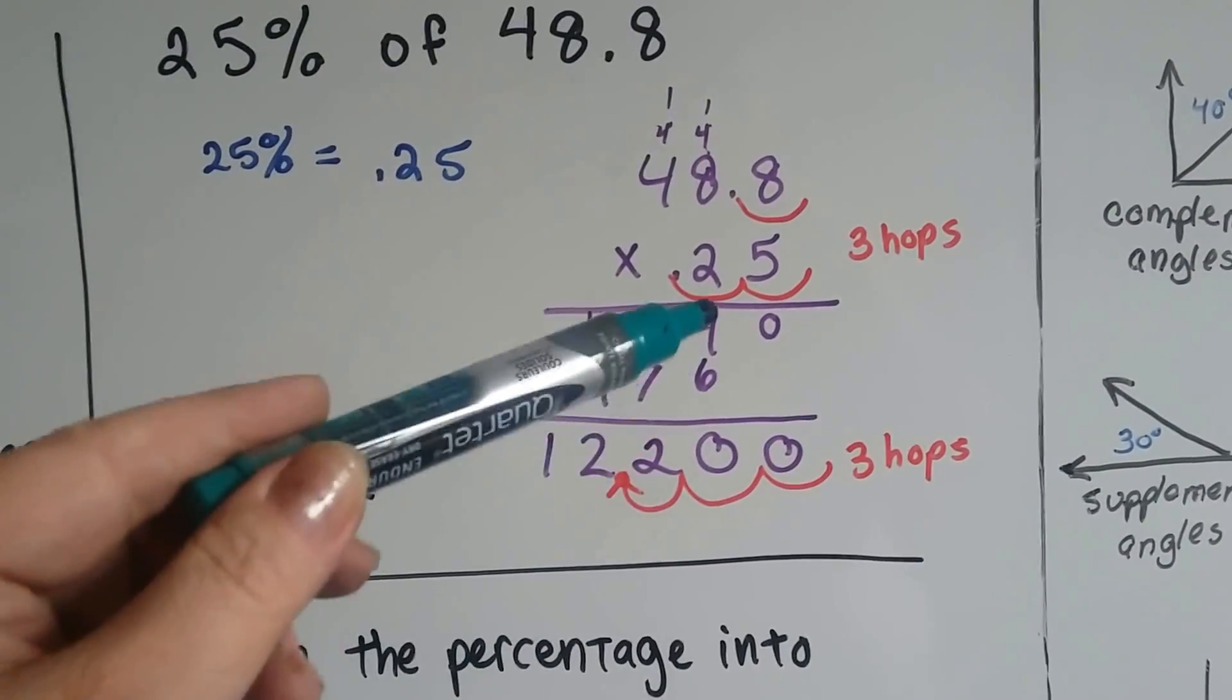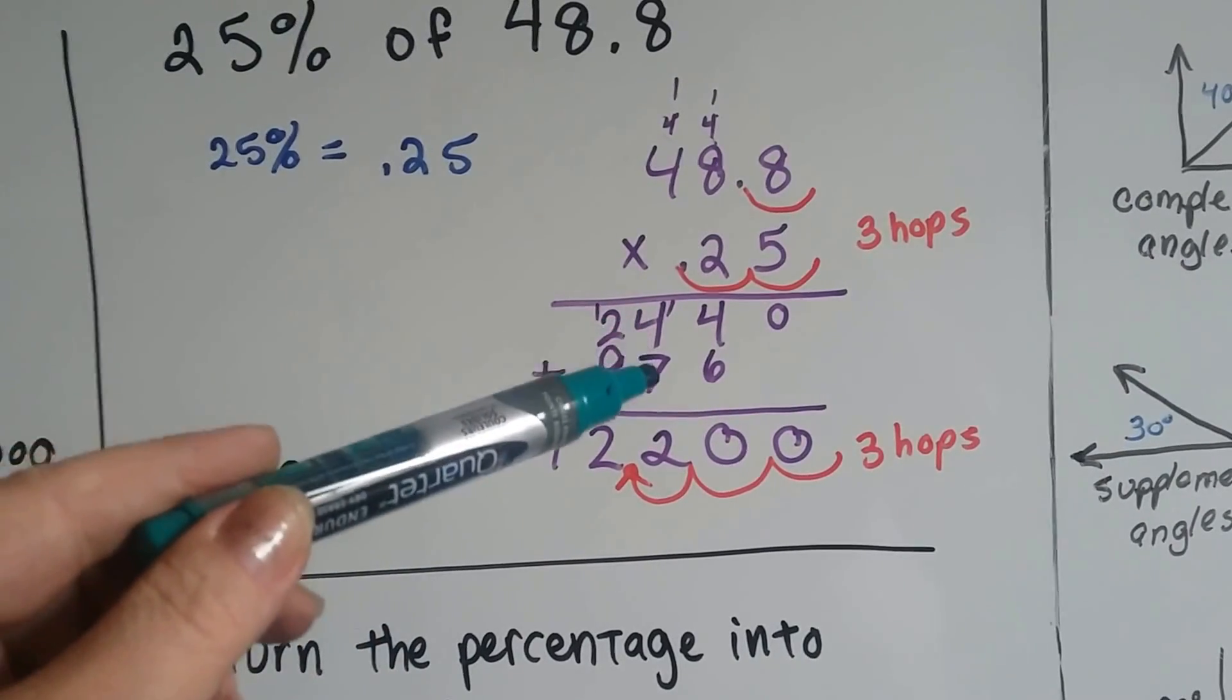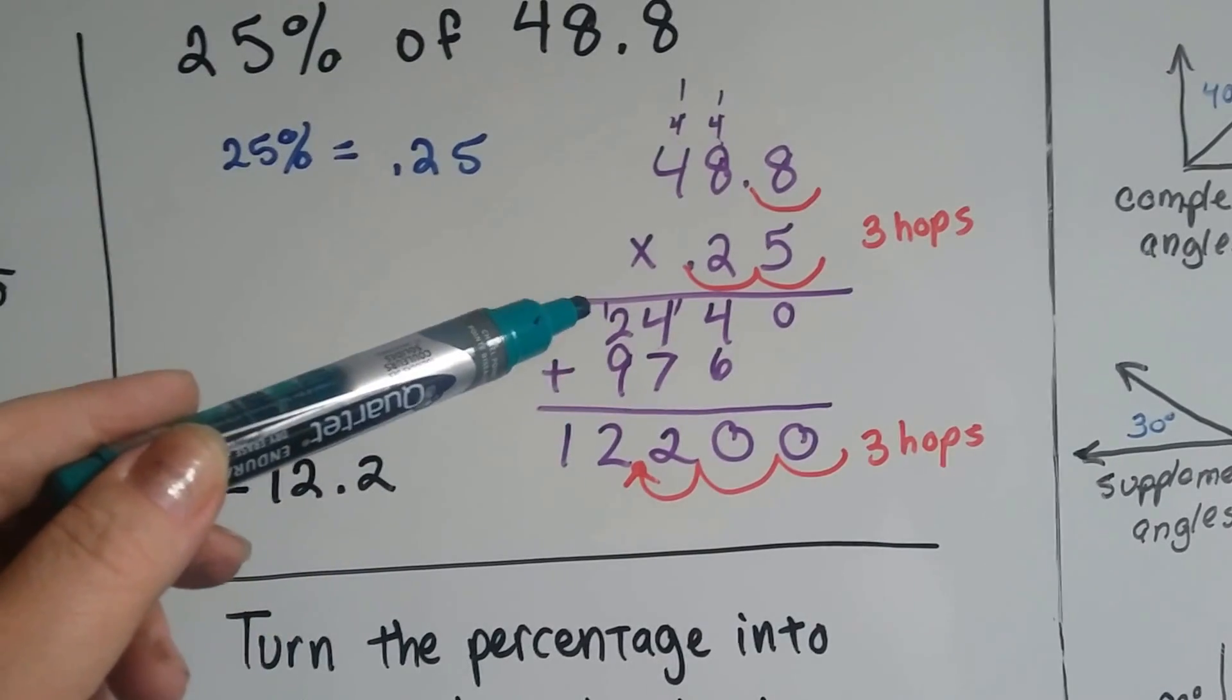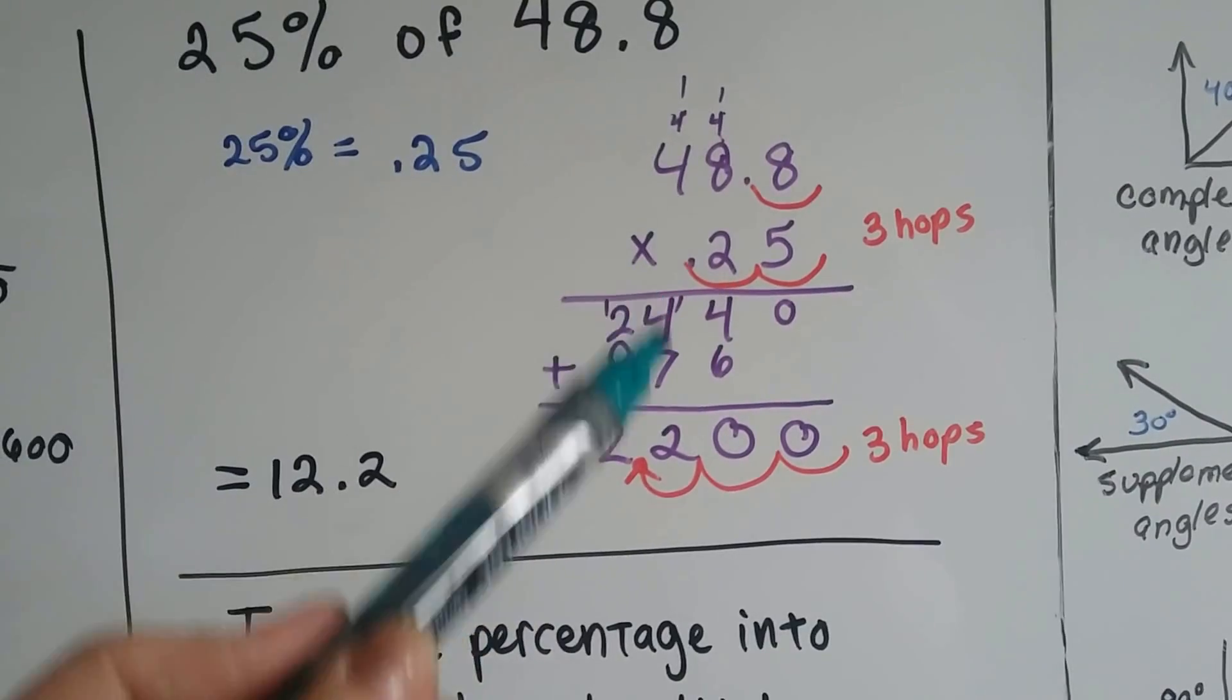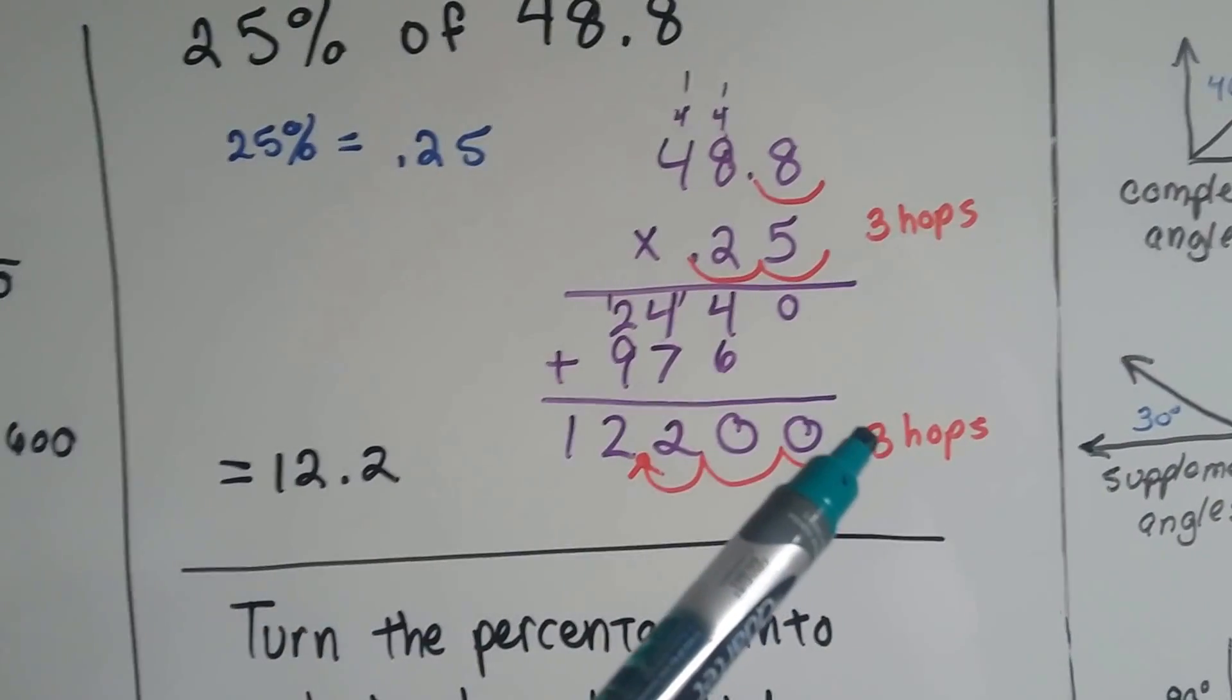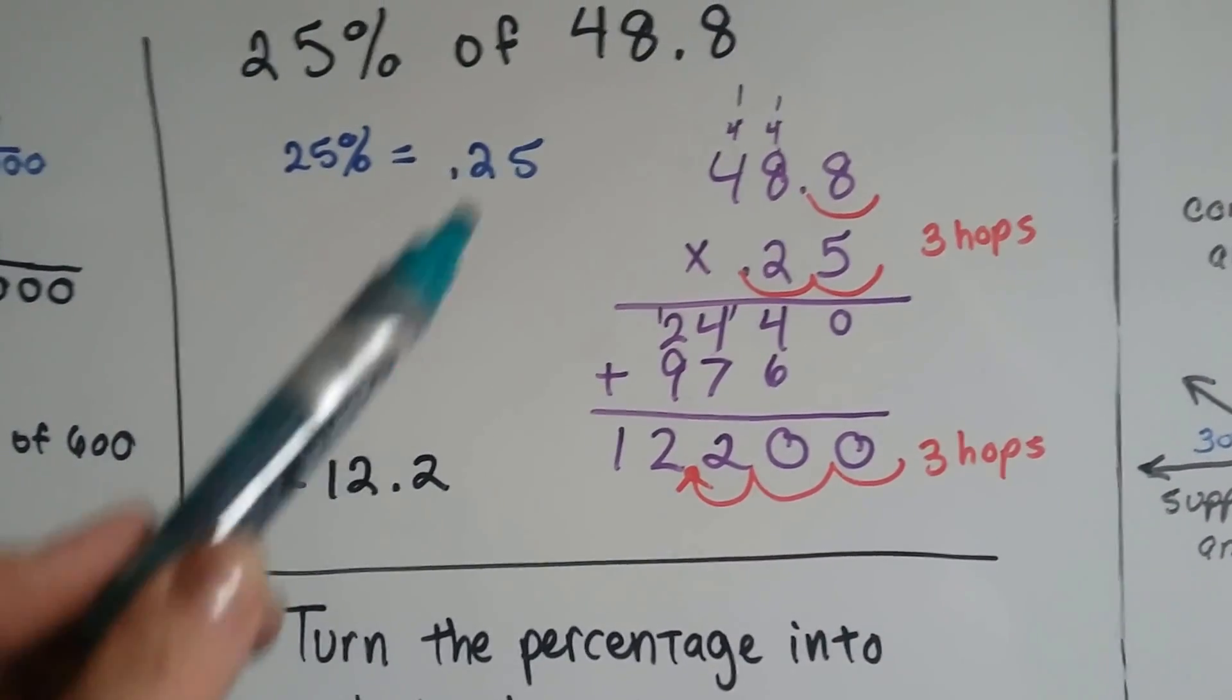Draw our line. We add. We get 0. 4 and 6 is 10. We carry the 1 and put the 0 down. 7 and 4 is 11, plus 1 more is 12. We carry the 1 and put the 2 down. 9, 10, 11, 12. We count the hops in the equation. 1, 2, 3. Because there's 1 here and 2 here, so that's 3 total. So we put 3 hops in the product. 1, 2, 3. Our answer is 12.2.